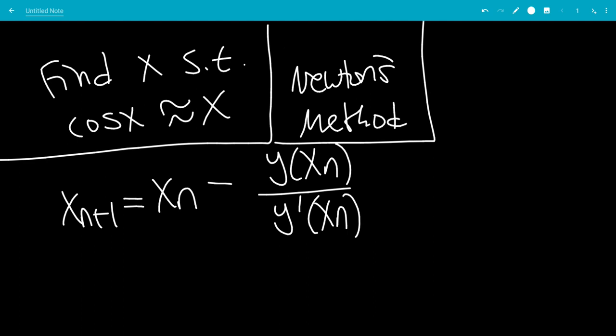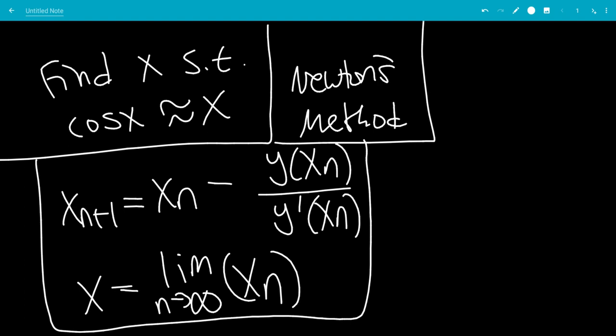And we want to find approximate x. So x, in reality, is the limit as n goes to infinity of xn. So you can pick the n to be as large as you want or as small as you want, but the larger numbers are better approximations.